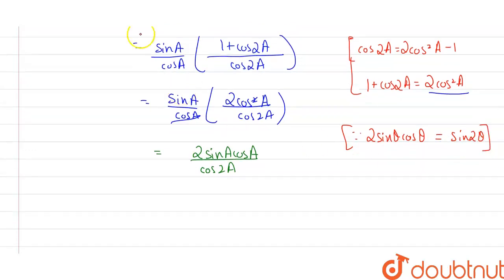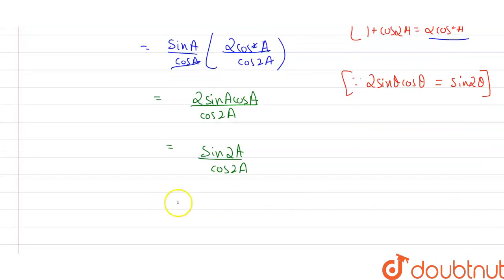So in that case this section will become sin of 2A. So this will become sin of 2A divided by cos of 2A, and sin divided by cos is exactly tan of 2A.